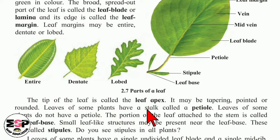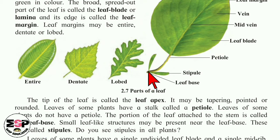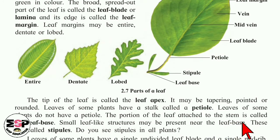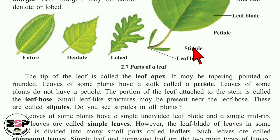Leaves of some plants have a stalk called petiole. This stalk is called as petiole. Leaves of some plants do not have petiole. The portion of the leaf attached to the stem is called the leaf base. Small leaf-like structures may be present near the leaf base, and these are called stipules. This small leaf-like structure is called a stipule.